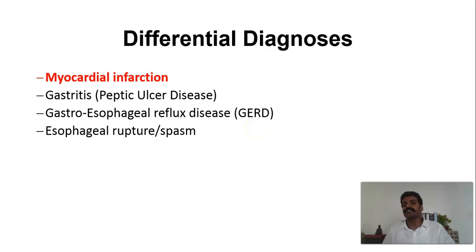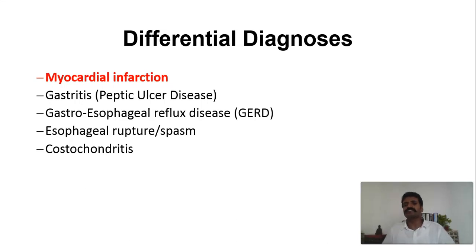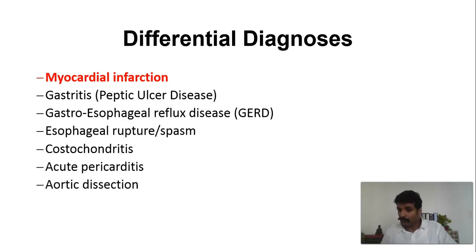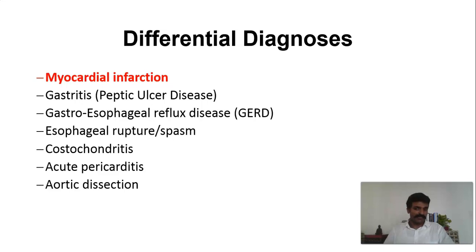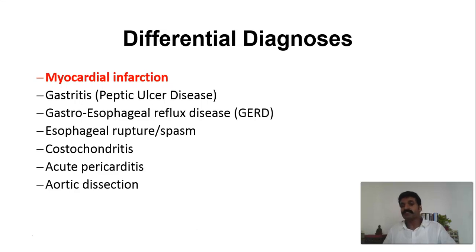There are much more common conditions like costochondritis, which can happen after a viral infection — usually there is tenderness at the rib joint areas. Viral infections can also produce acute pericarditis. And never forget that in a patient who has Marfan's syndrome, or an elderly patient with hypertension, there is always a possibility of dissection of the aorta. In such individuals, the pain tends to radiate to the back.